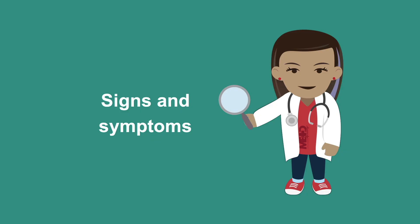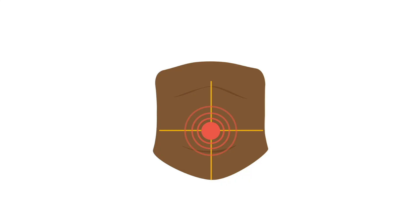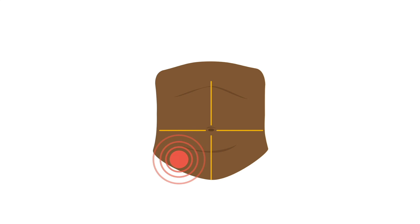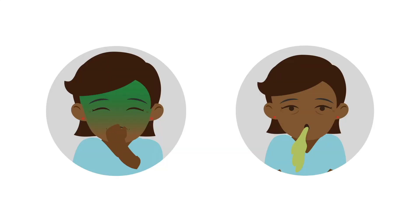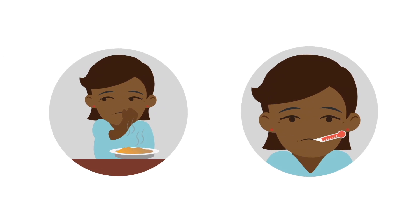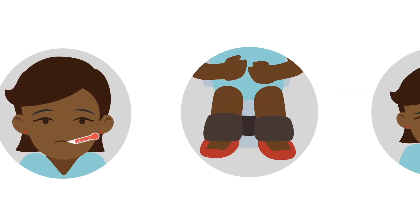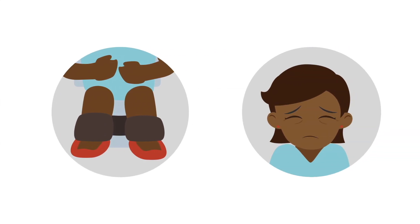The signs and symptoms of acute appendicitis include abdominal pain. The pain often starts in the periumbilical region and then migrates down to the right lower quadrant. The classic constellation of symptoms of appendicitis are right lower quadrant pain, nausea and vomiting, anorexia, fever, diarrhea, and malaise.